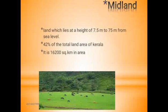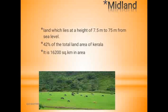This is the midland, ranging from 7.5 meters to 75 meters from the sea level. The river is a meandering phenomenon in the midland. Comparatively, the Eastern Highland has a steep slope, but in the midland the slope is gentler and rivers meander.